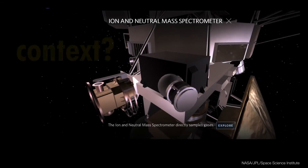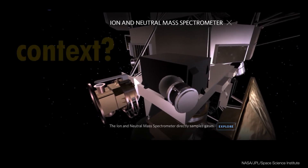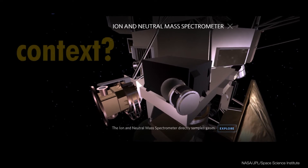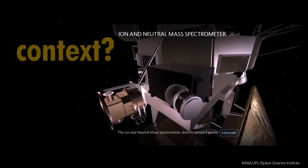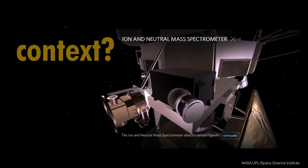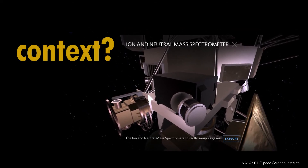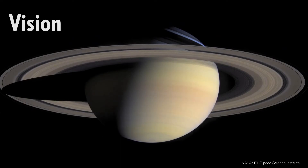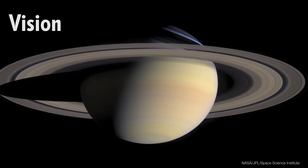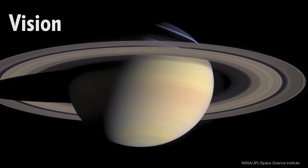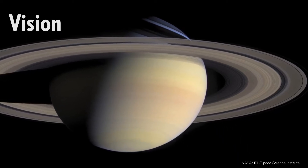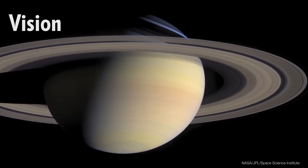You have to start by remembering that things that are perfectly obvious to you are not obvious to other people. Some of your audience might know what an ion and neutral mass spectrometer is and why you might want to use one, but most will not. To make people care about an instrument like this, you must put it in context. That means starting with a vision — how it will make the world better. In this case, you would begin with astronomers wanting to know what the mysterious rings of Saturn are made of and how old they are.